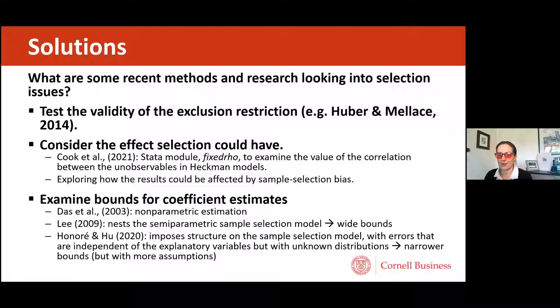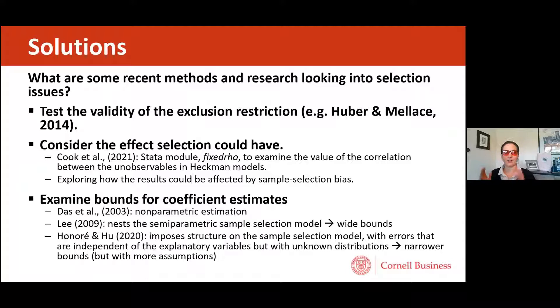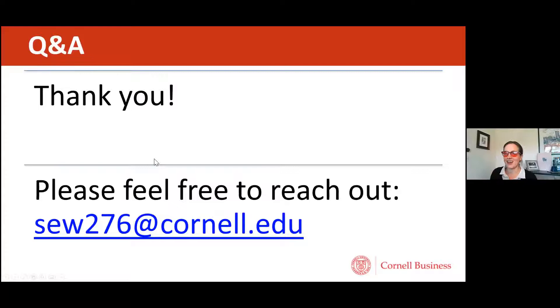I'd highly recommend looking at the Serto et al. paper, which covers other things to consider in sample selection models — for example, the significance of lambda alone does not indicate sample selection bias. The point is not to say don't use Heckman; in fact, it's the opposite — use it, but acknowledge you'll never be able to definitively say you have a perfect exclusion restriction. Be transparent about potential issues and clear about your context. I'm happy to share these slides and take questions.